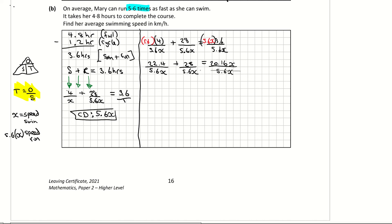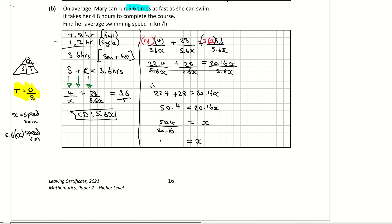I drop the common denominator since all terms share it, leaving the linear equation: 22.4 + 28 = 20.16x. Adding the left-hand side gives 50.4 = 20.16x. To solve for x, I divide both sides by 20.16.